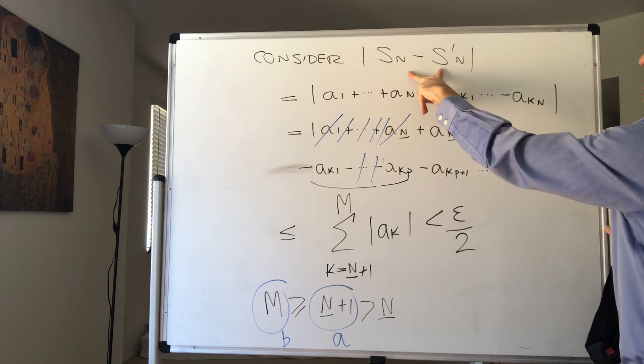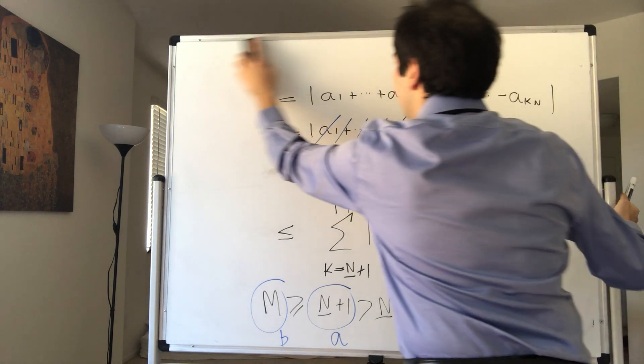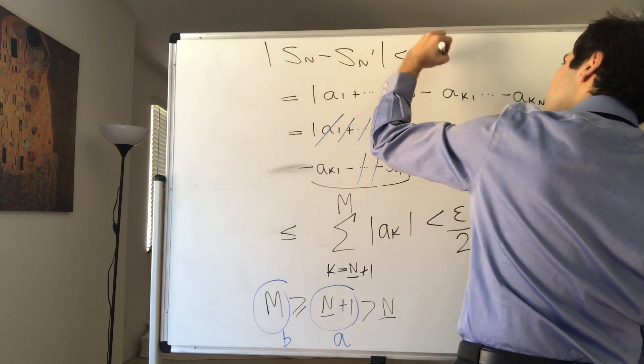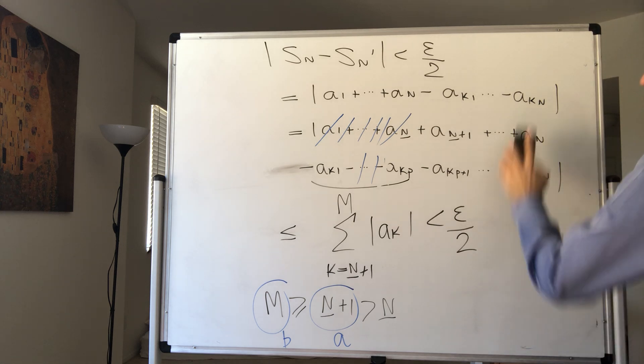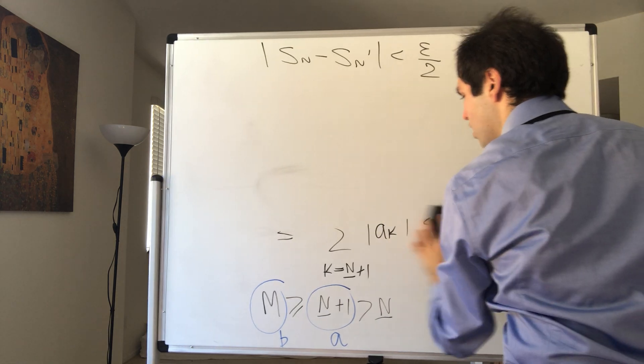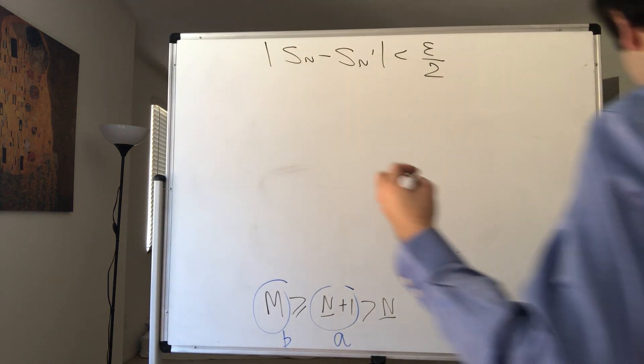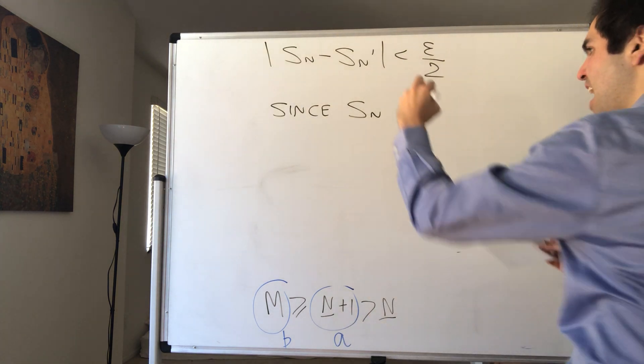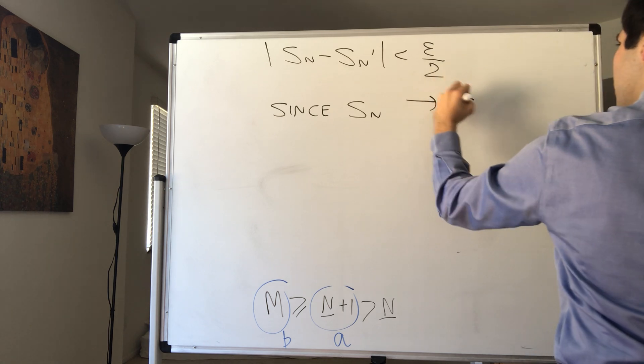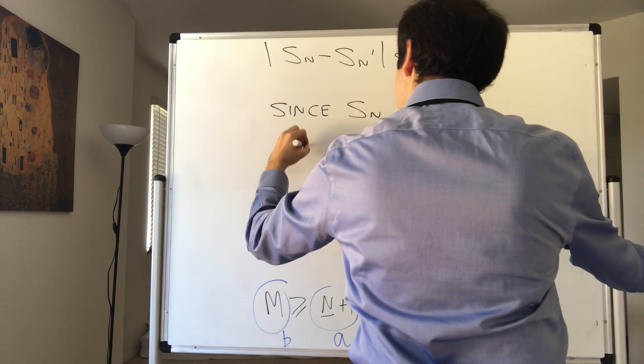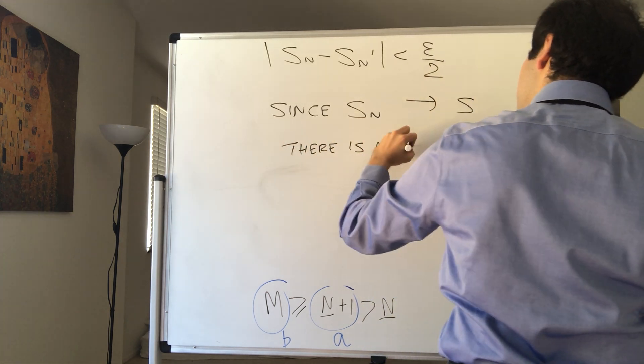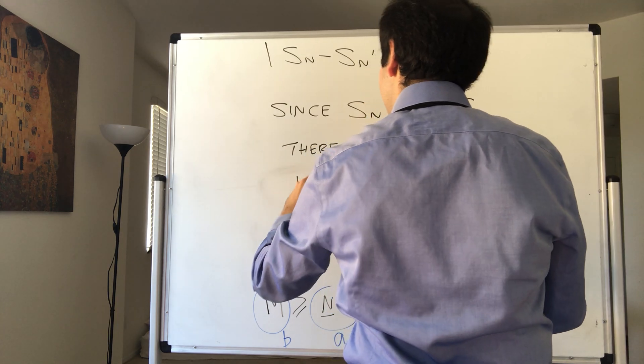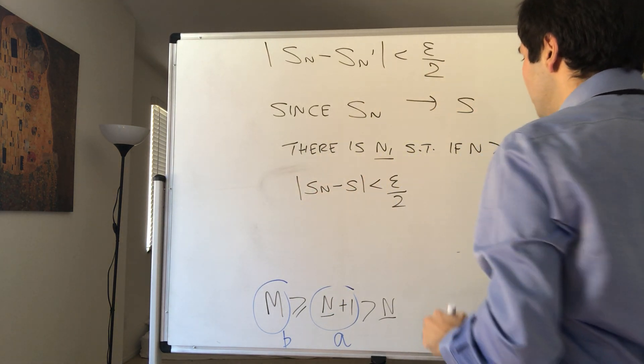Very good. So what do we know? We know the difference in those partial sums is less than epsilon over 2. And essentially we can conclude. So |S_n - S'_n| is less than epsilon over 2. Therefore, now for the second step, since we know by definition S_n converges to S, there is some N1 such that if n is bigger than N1, we have that the difference of S_n and S is less than epsilon over 2.